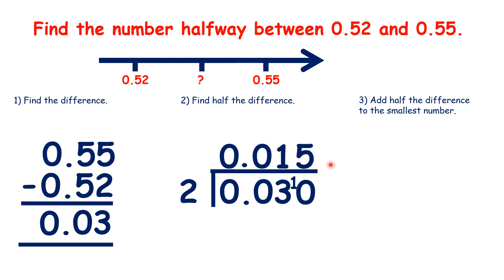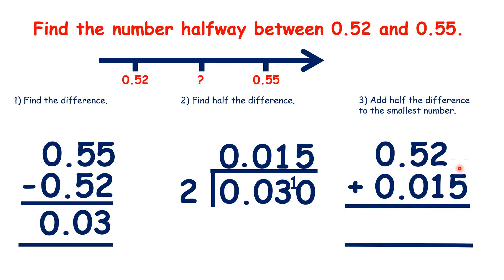So now, we just add 0.015 to our smallest number. So that's 0.52 plus 0.015. When we add those, we get our halfway number, 0.535.